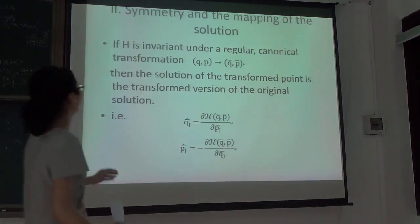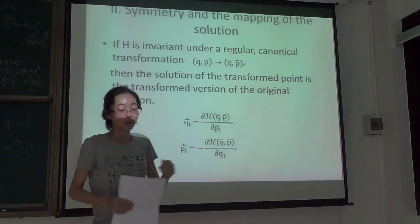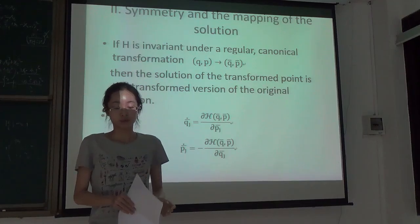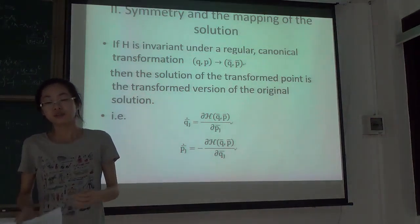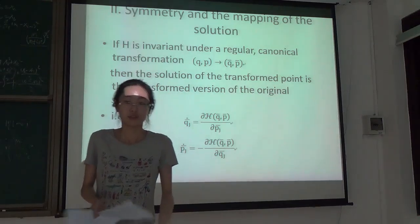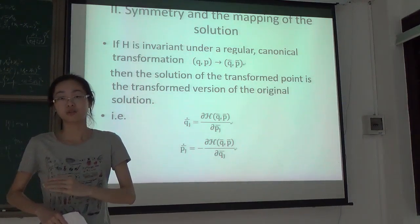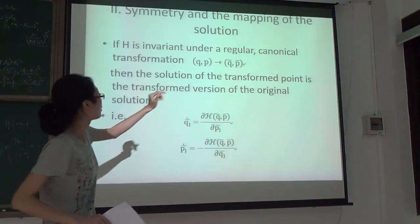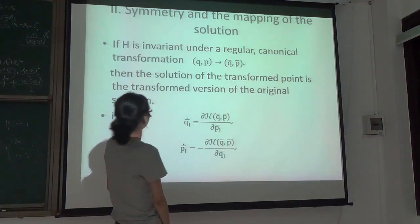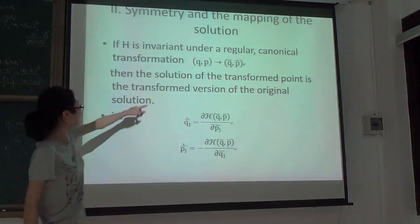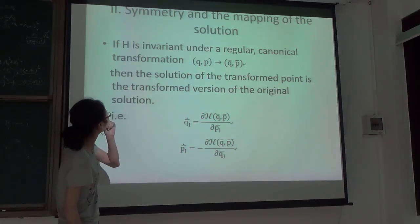The second theorem is this. The Hamiltonian is invariant under a regular canonical transformation. What I mean by regular transformation is: if the original coordinate ranges from minus infinity to positive infinity, then the new coordinate must also range from minus infinity to positive infinity. So the transformation that transforms Cartesian coordinates to polar coordinates is not a regular transformation. And if you find this theorem a little bit confusing, there's no problem with you — this statement is one I invented.